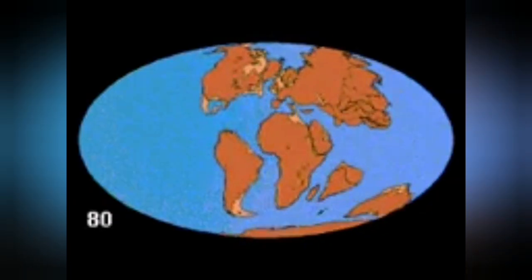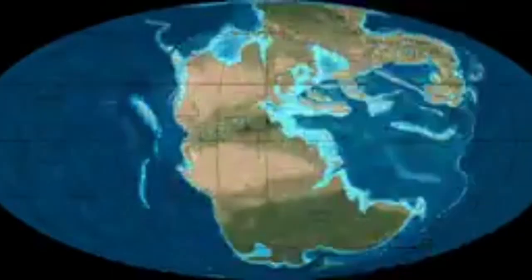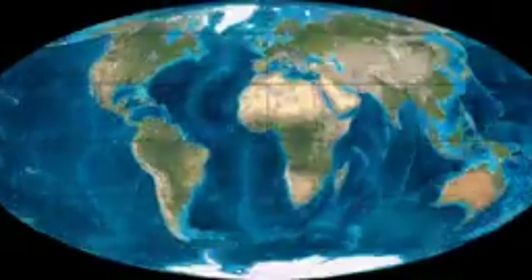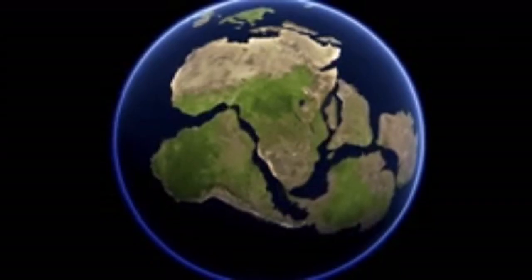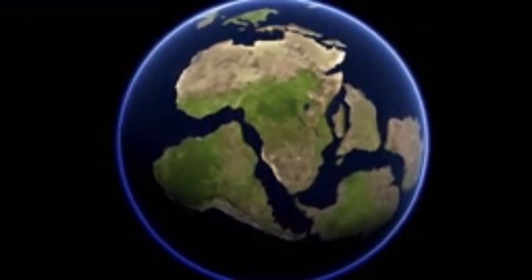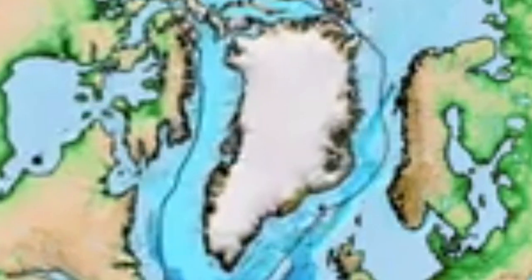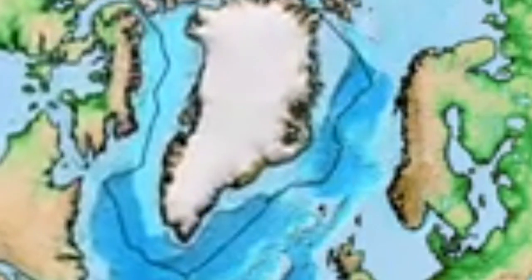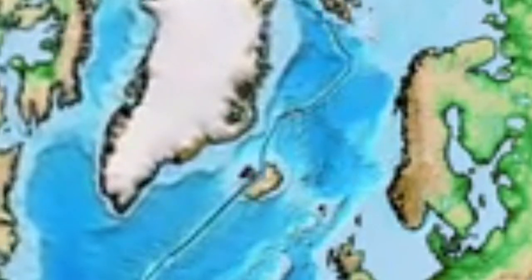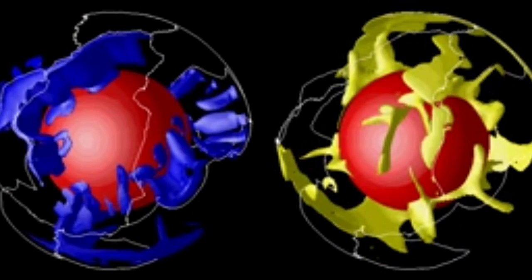Now we know that the earth's continents are not in their original positions. They have moved many times over since the creation of the earth 4.5 billion years ago, and this process is continuing. We can see it in real time in Iceland, where the creation of the Atlantic Ocean led to the formation of this island.